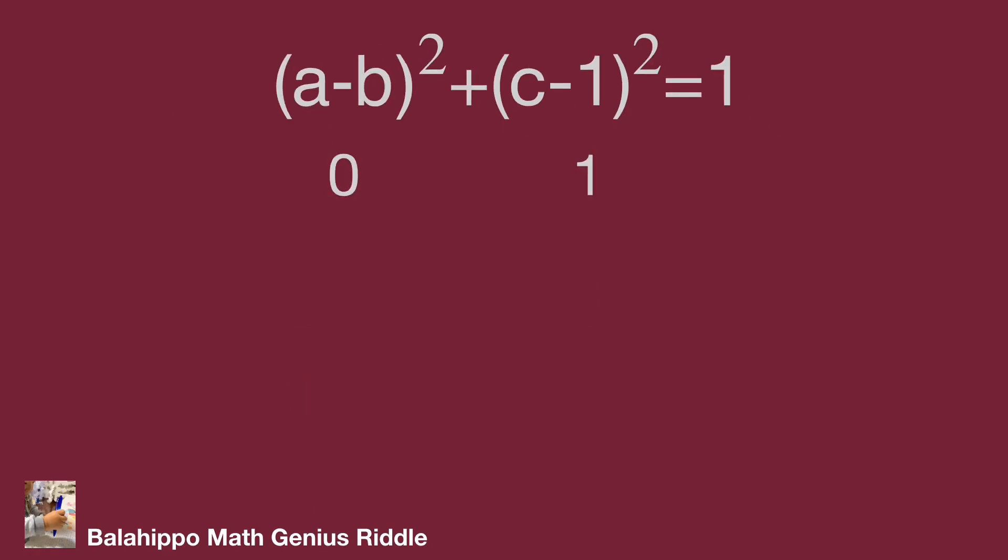In the 0, 1 group, a - b equal 0 and c - 1 equal 1, so a equals b, c equals 2.